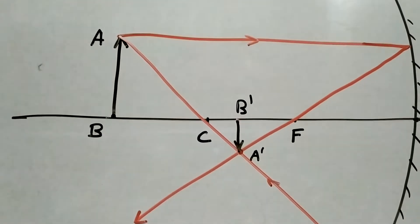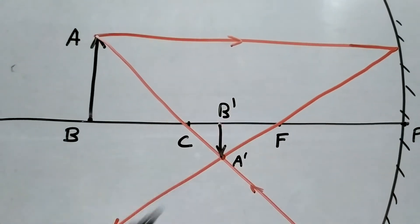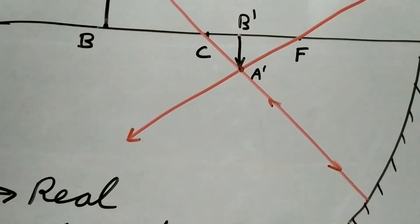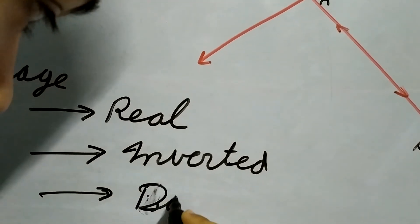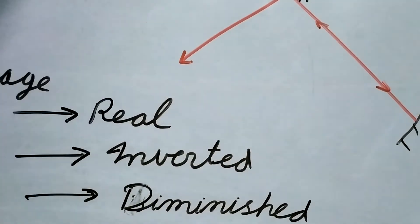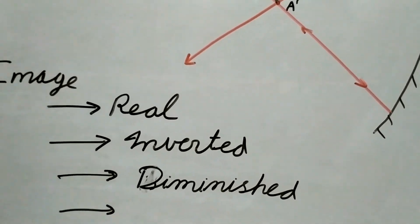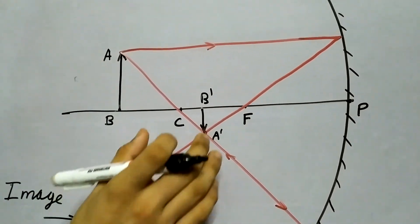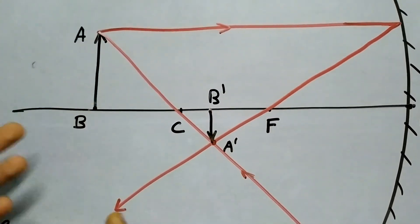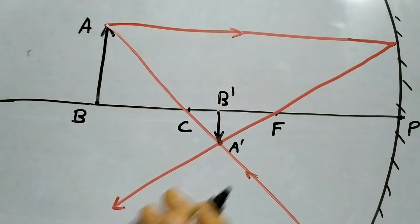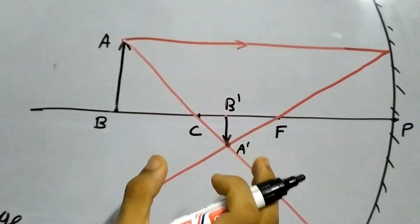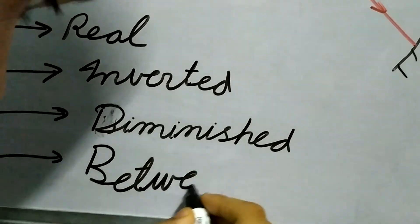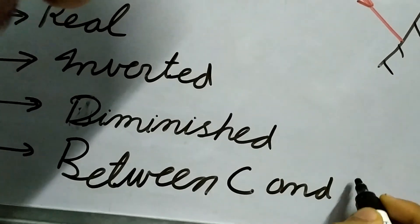What is the size of this image? The size of this image has reduced. If you compare the magnitudes of AB and A dash B dash, the size has reduced. So we call this a diminished image — it is diminished in nature, it has reduced in size. And where is the image? It's between the center of curvature and the focus. The key thing is that it will lie somewhere between the center of curvature and the focus, so between C and F.